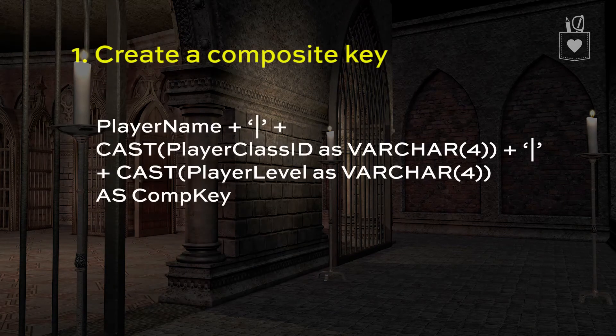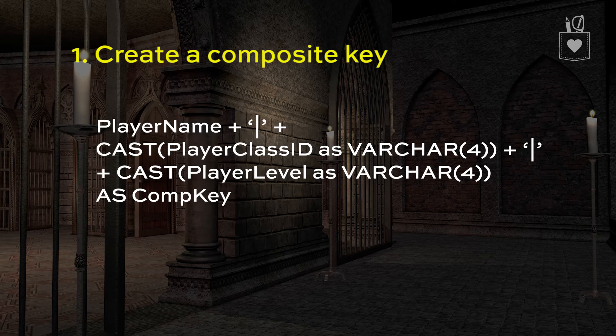Step one is to create a composite key. We need to find something that can uniquely identify each row in the table just based on the columns we already have, not including the ID. In this case, what we're going to do is take the player name, use a pipe delimiter, then use the player class ID, put another delimiter after that, and the player level — and we'll use that as the composite key.